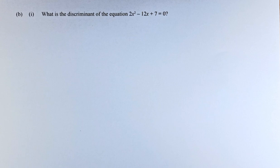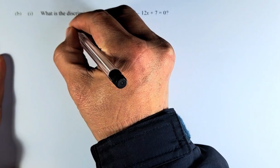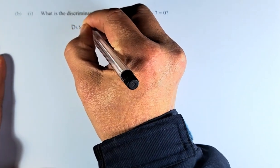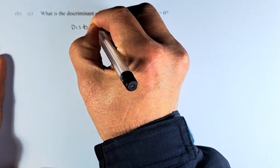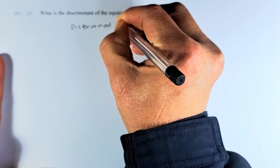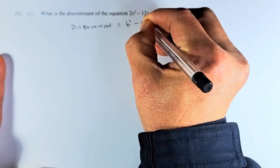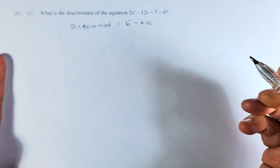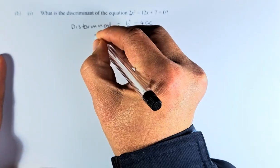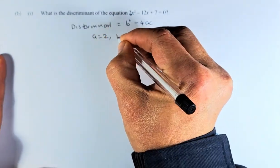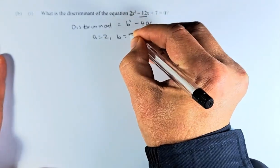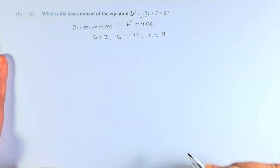So those of you who are not familiar, discriminant is actually equal to b² - 4ac. So what's a, b, and c? a = 2, b = -12, and c = 7, the constant.